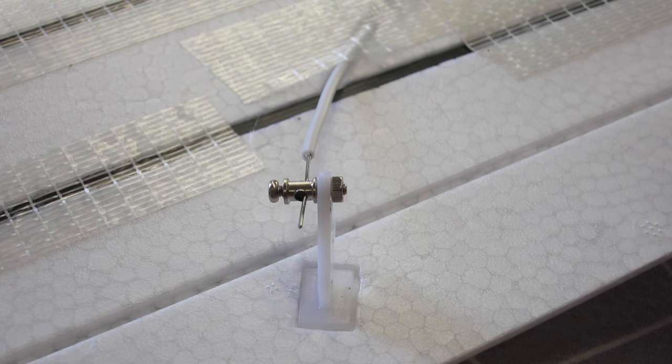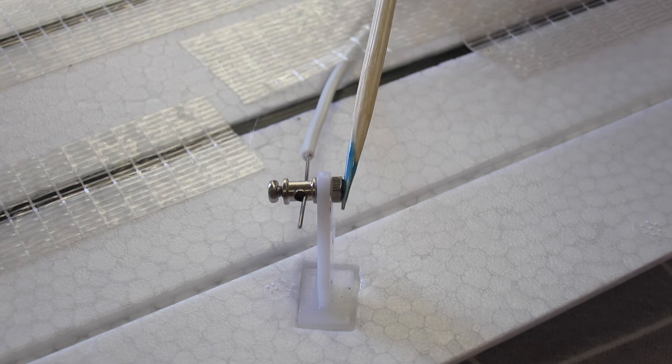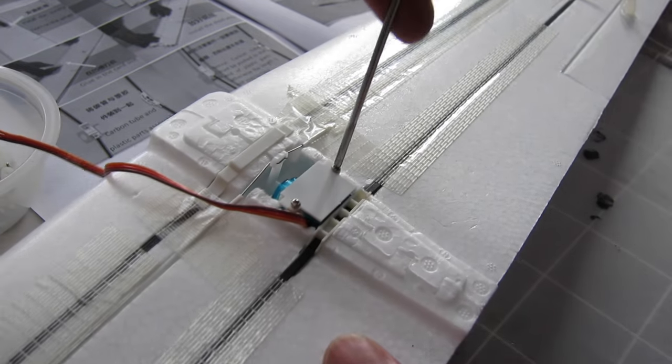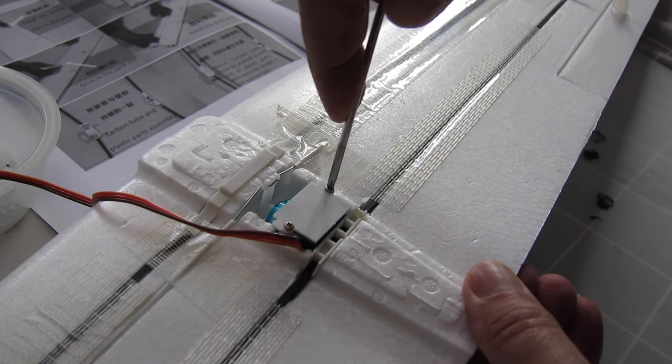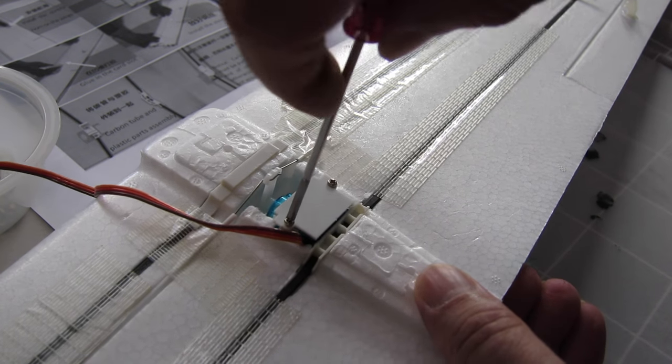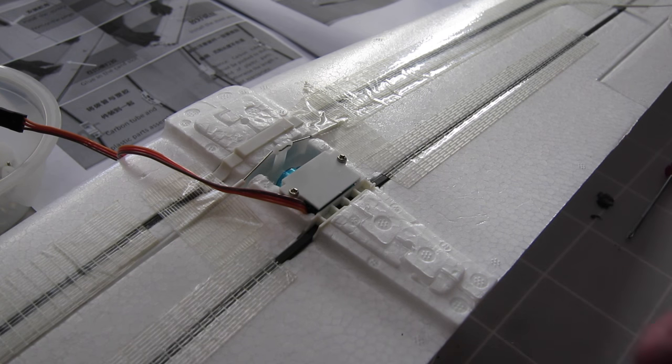Now for a little bit of Loctite just to make sure this doesn't come undone, and I might as well glue the wing together as well.